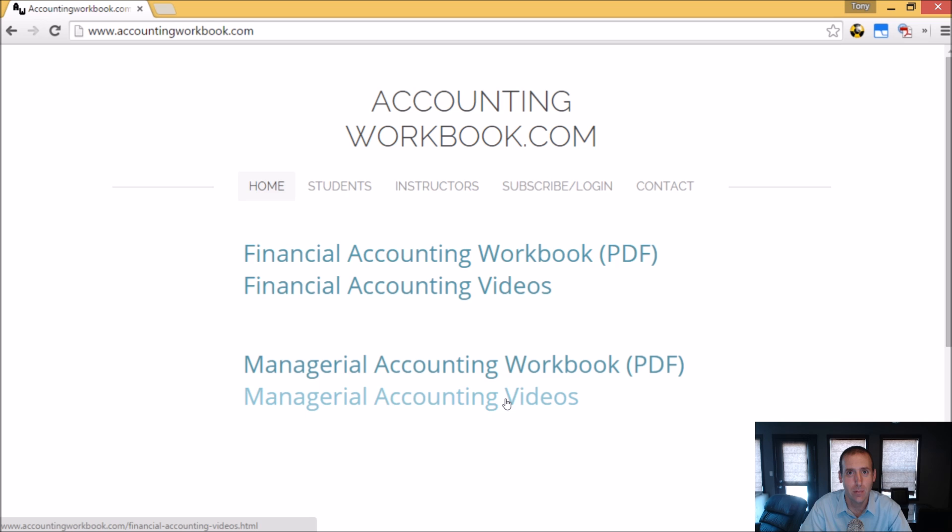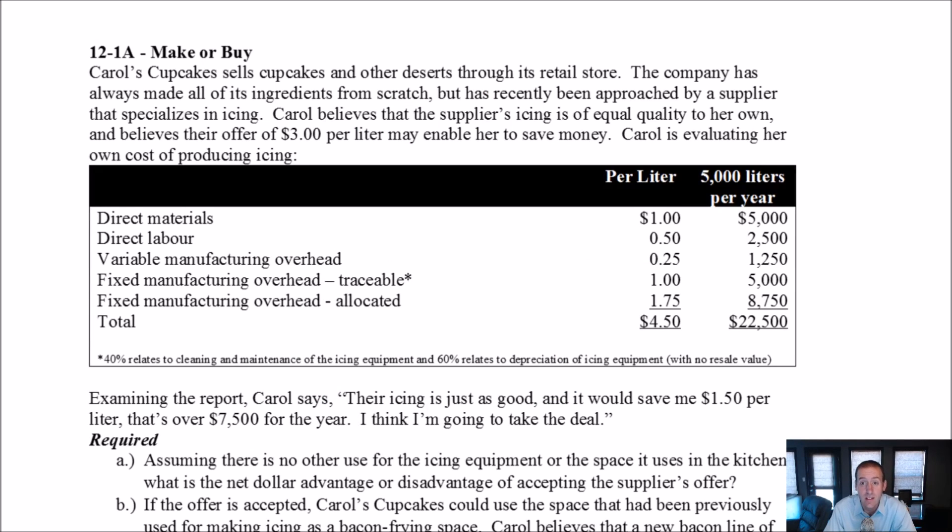Okay, let's get started with the problem. Let's examine problem 12.1, a make or buy decision. So in a make or buy decision, we're going to be placed in a situation where we need to decide whether we should be making a product internally or purchasing it from an outside supplier, perhaps at a cheaper cost. And for a lot of companies, this is like an outsourcing decision, right? Do you do the work yourself or do you get somebody else to do the work for you?